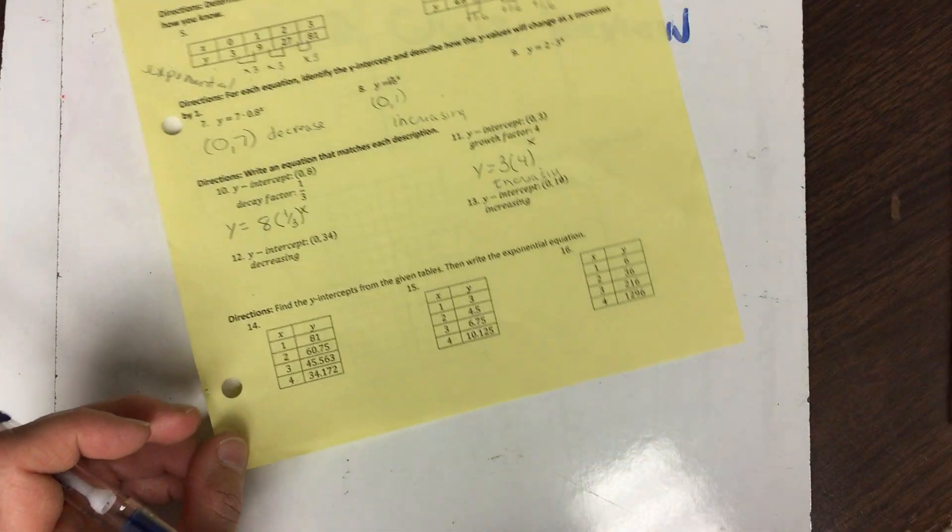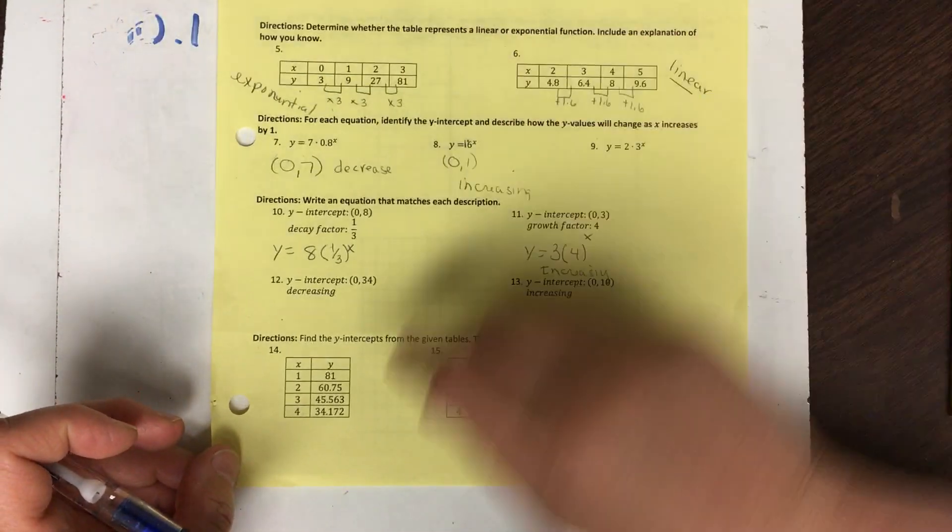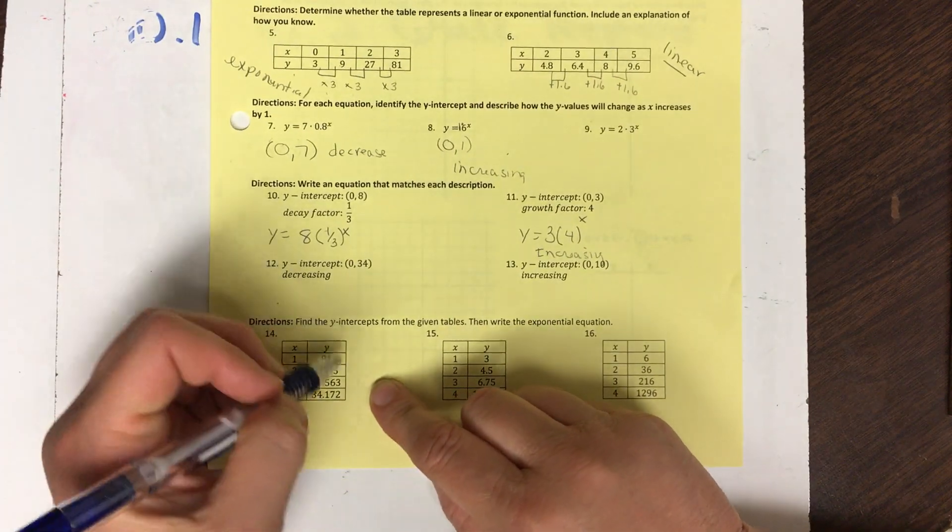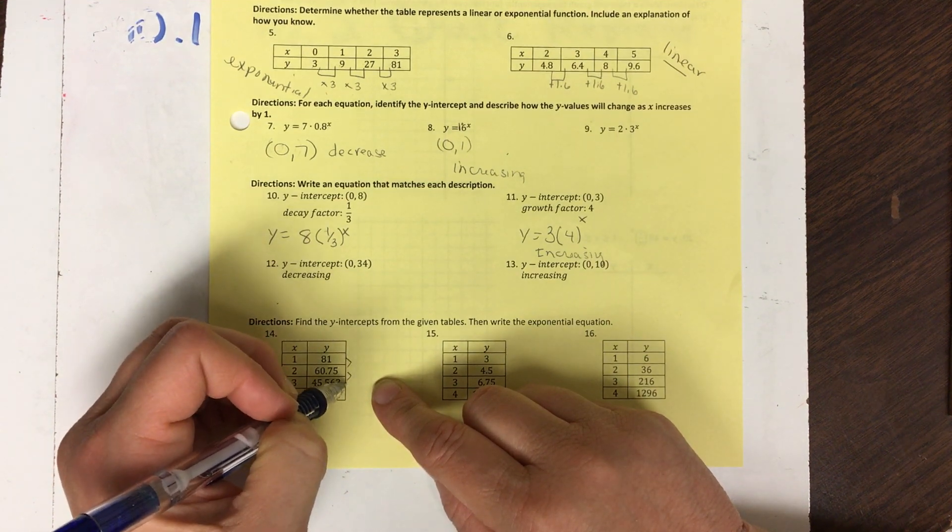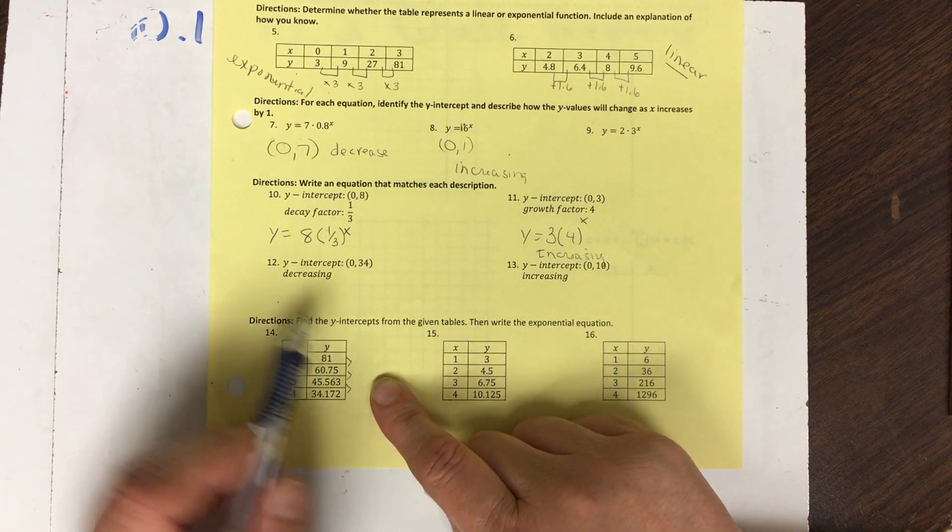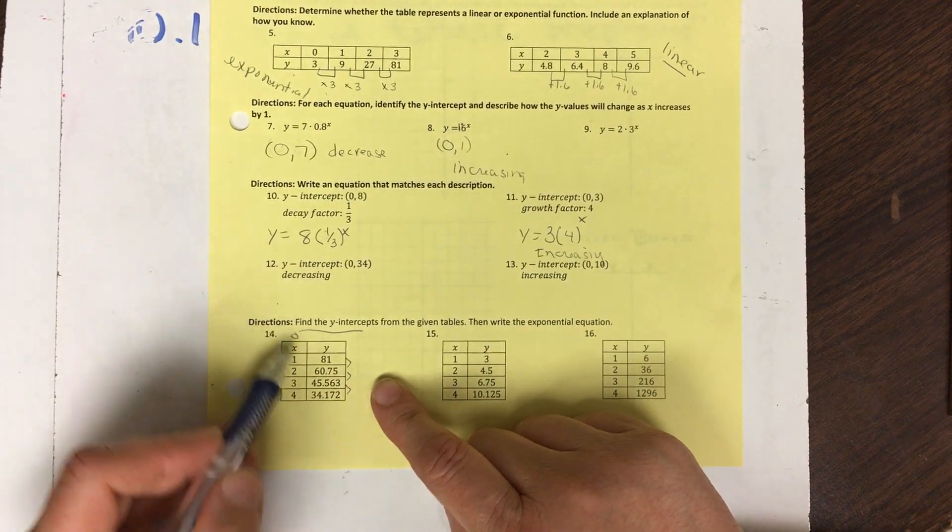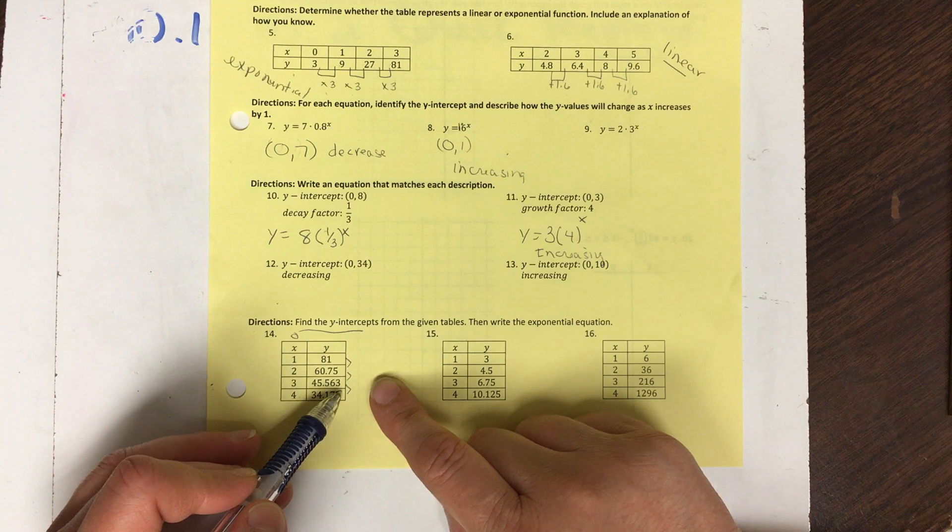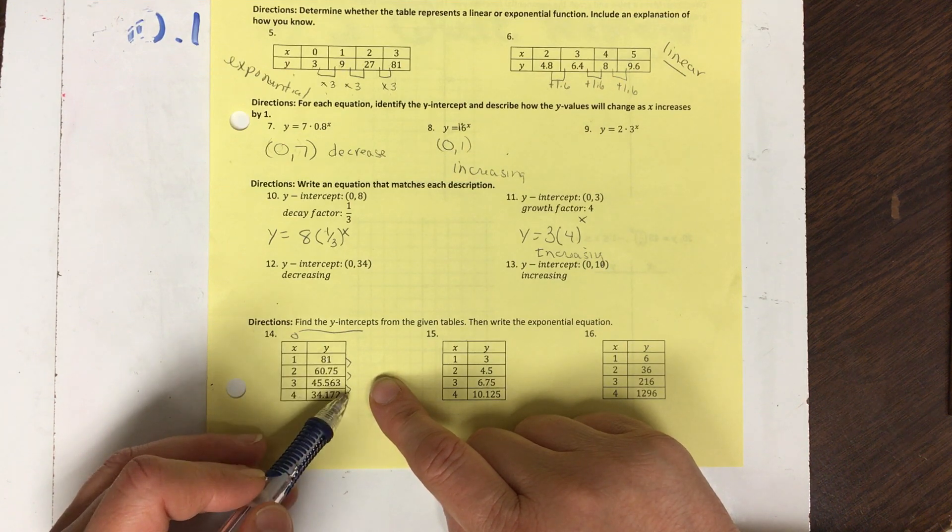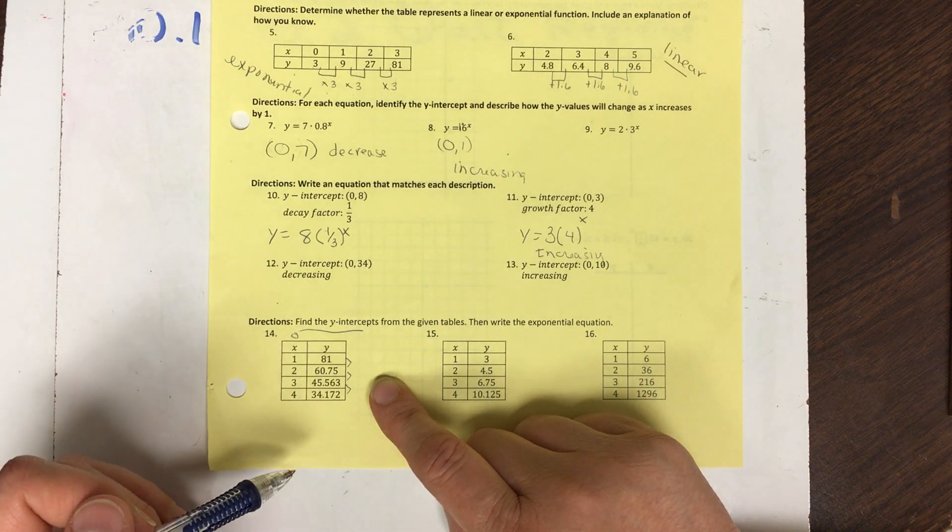Alright, let's take a look at this section down here. So between here and here, we have to figure out what's going on, and then we need to find the y-intercept. Well, my y-intercept's when x equals 0. I don't have that, so I need to use this, whatever we figure out here, and then go backwards to get that.